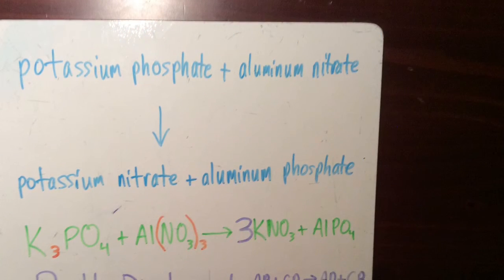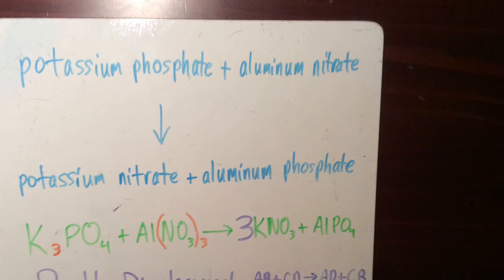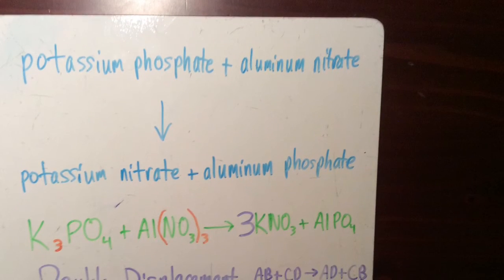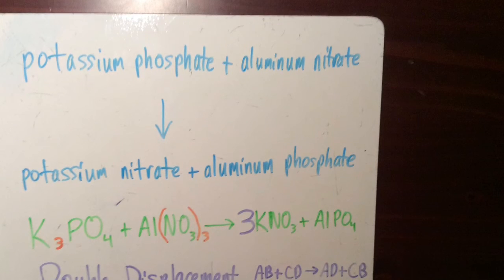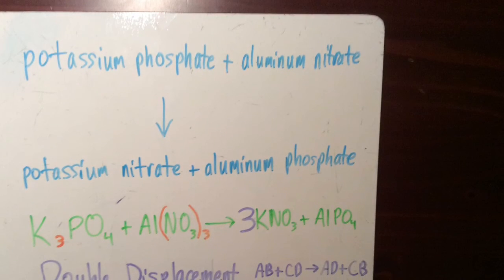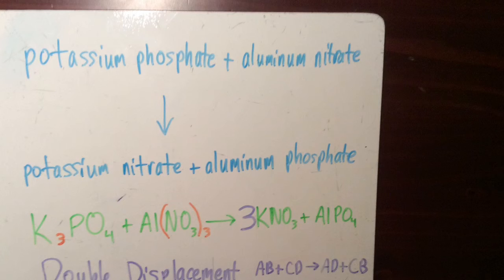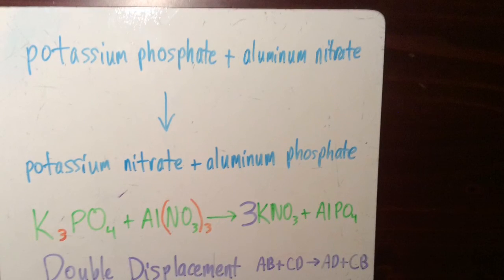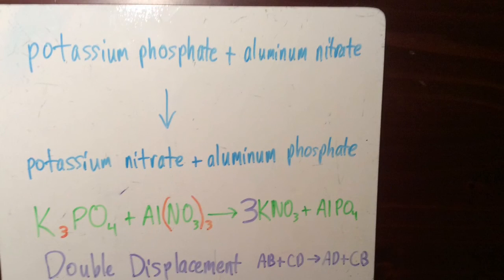This formula is classified as double displacement because it follows the formula AB plus CD yields AD plus CB. Potassium combines with nitrate, which is the AD combination, and aluminum combines with phosphate, which is the CB combination.